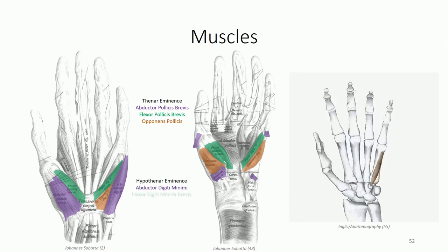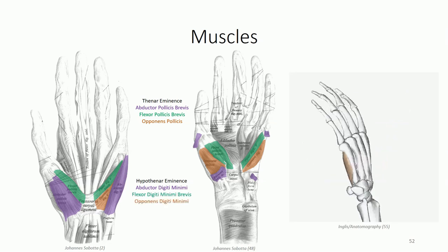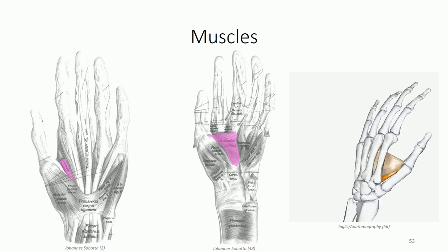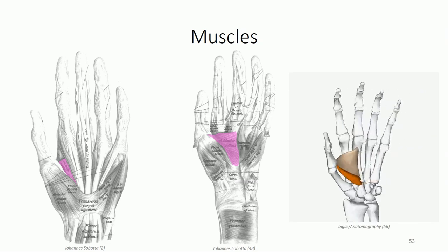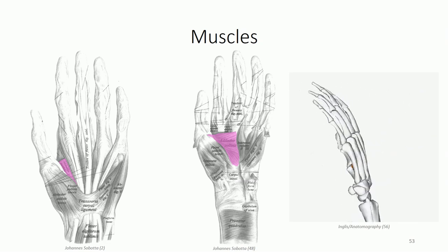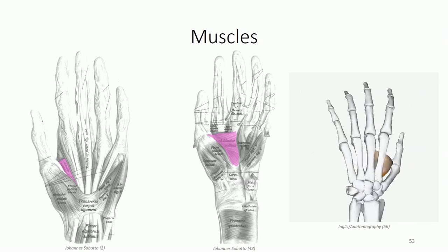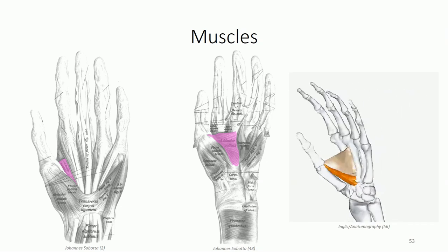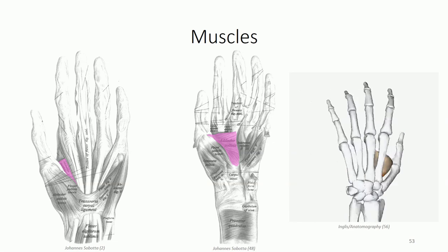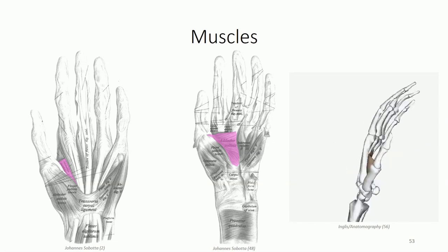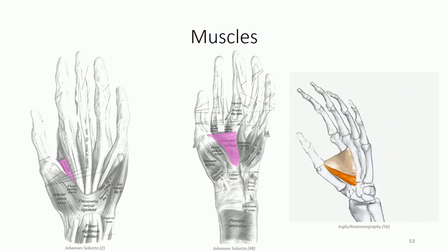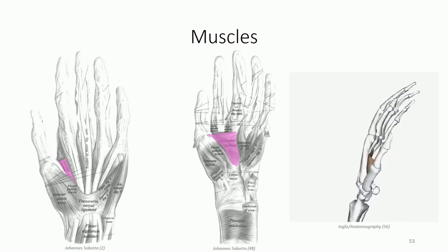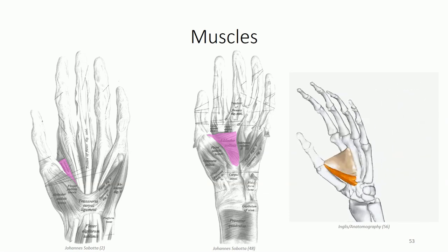The adductor compartment contains a single muscle to identify: the adductor pollicis. This is a bicipital muscle with an oblique head originating off the base of the second and third metacarpals, and a transverse head attaching to the shaft of the third metacarpal. The fibers converge on the medial surface of the proximal phalanx of the first digit, and contraction generates adduction of the thumb towards the palmar surface of the hand.